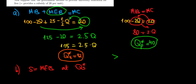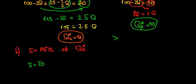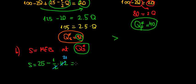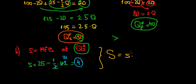The marginal external benefit is 25 − 0.5Q, so the subsidy equals 25 − 0.5 × 42 = 25 − 21 = $4 per unit. The total cost of the subsidy to the government is the subsidy per unit times all units produced at the social level: $4 × 42 = $168. That's it for this question.